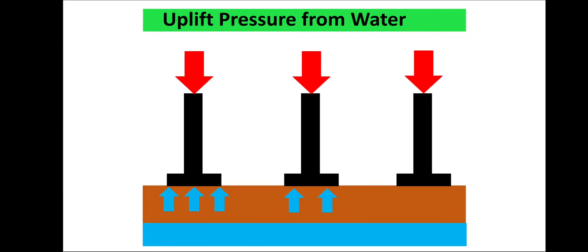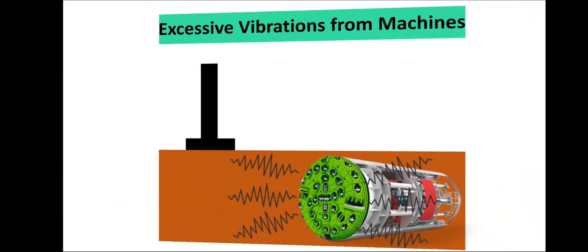Uplift pressure from water — the buoyant force or upthrust from water below the footing may cause differential settlement. Since this is a natural force, water content or moisture content within the soil cannot be easily predicted, and this uplift pressure may disturb or cause differential settlement to the footing structure.